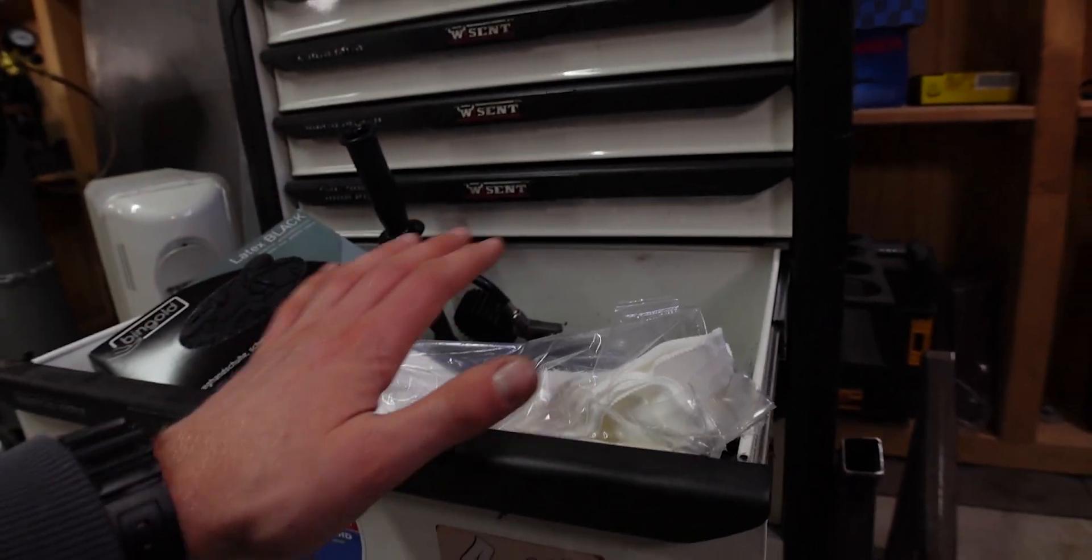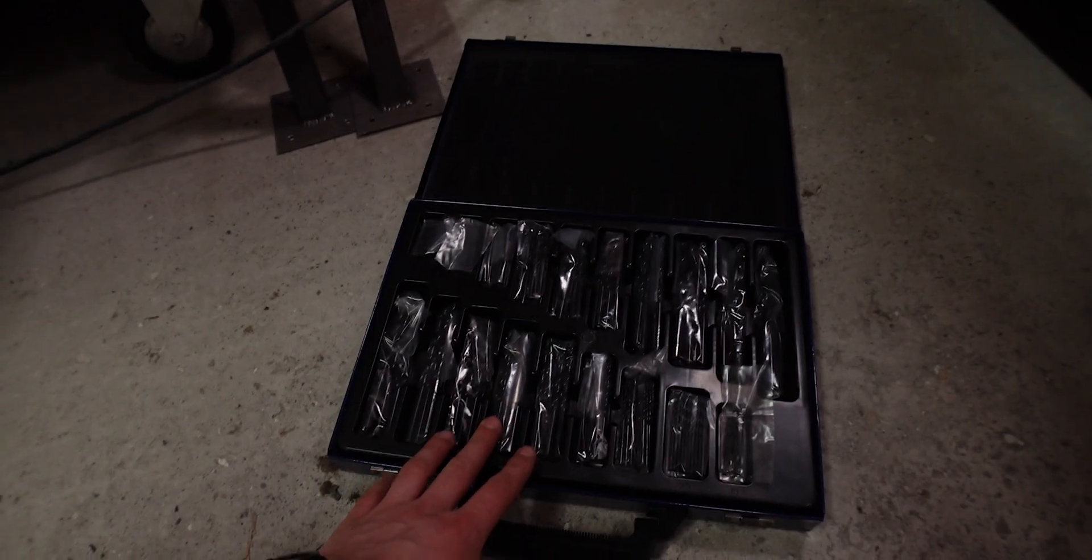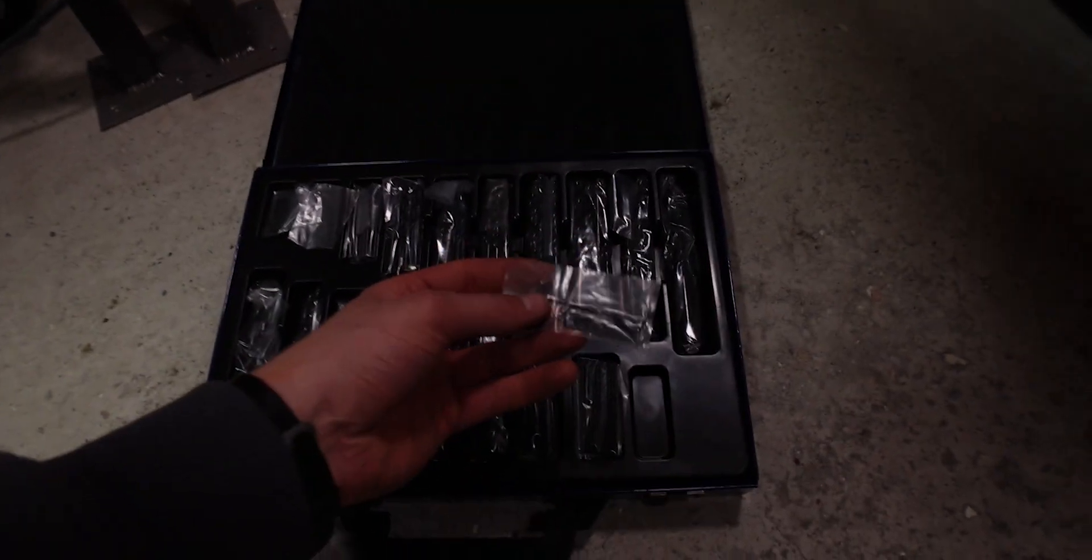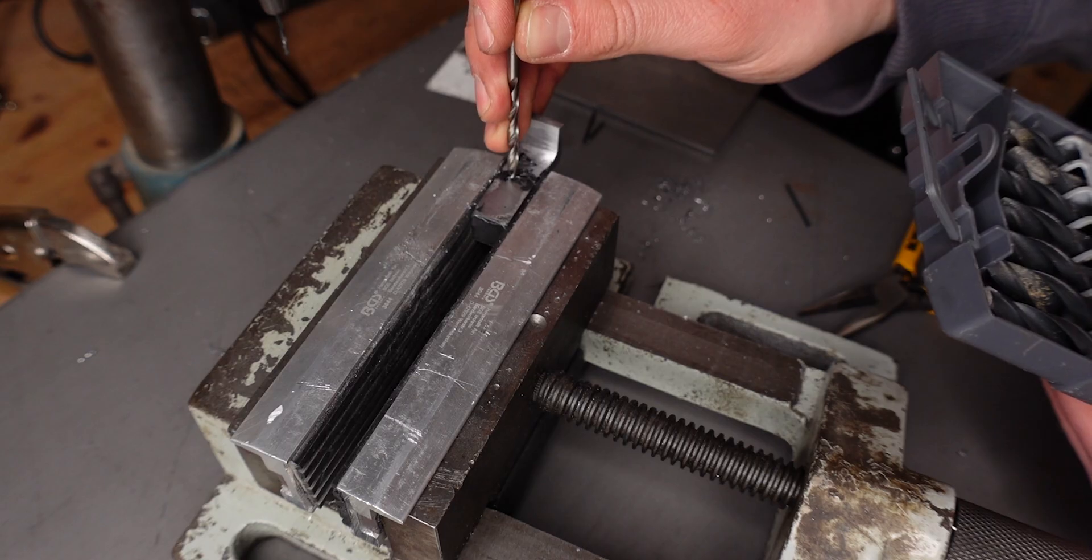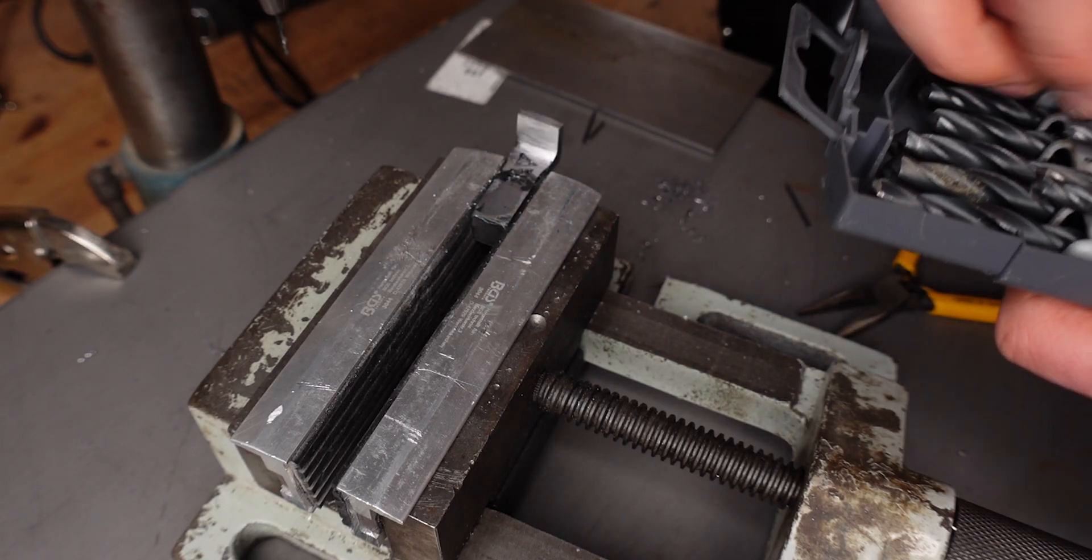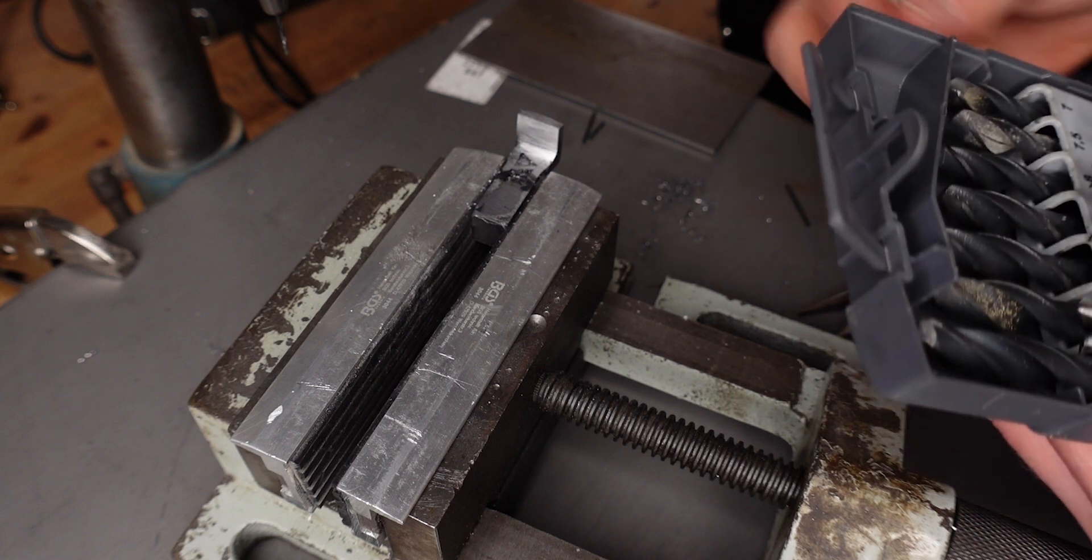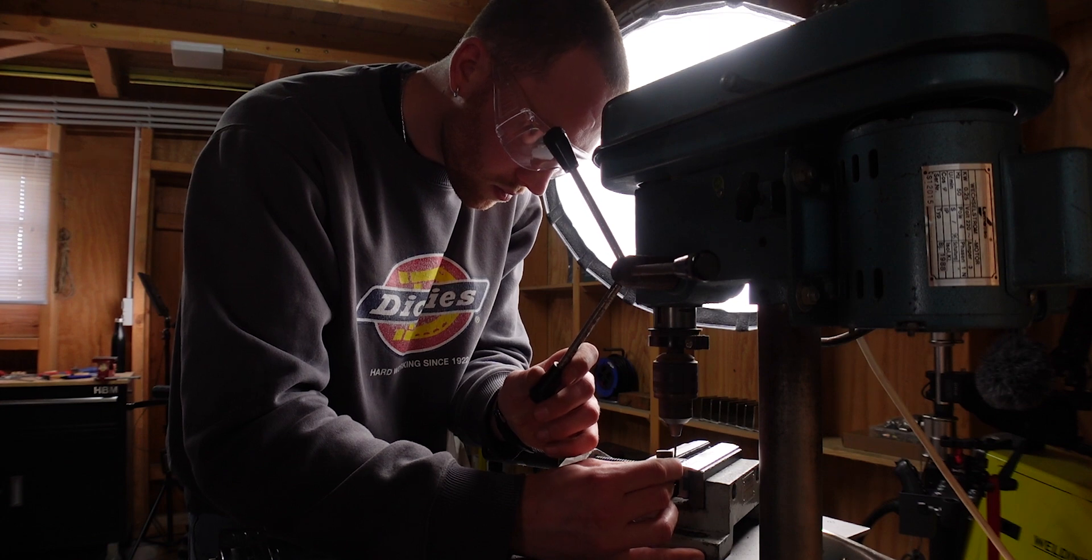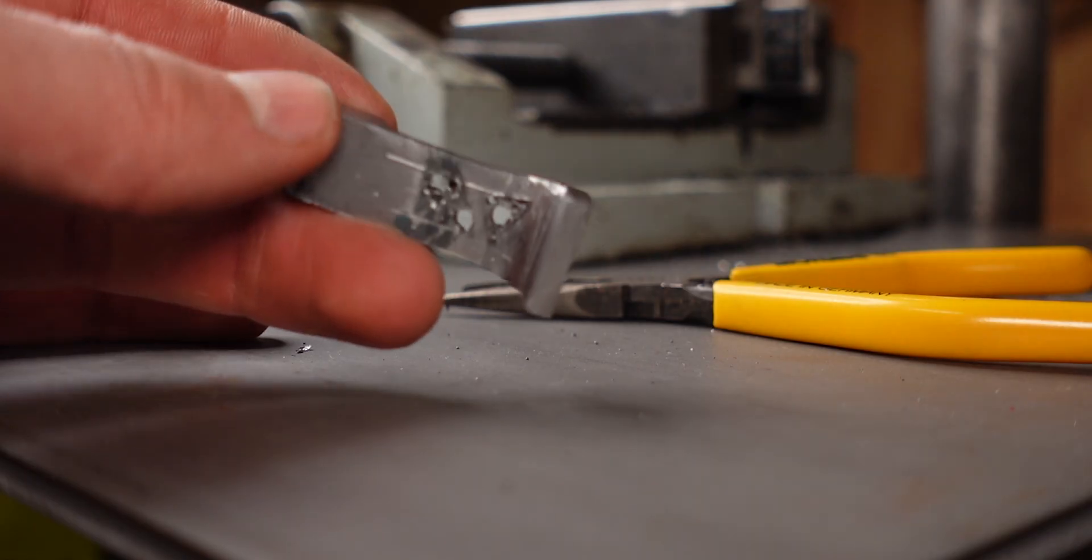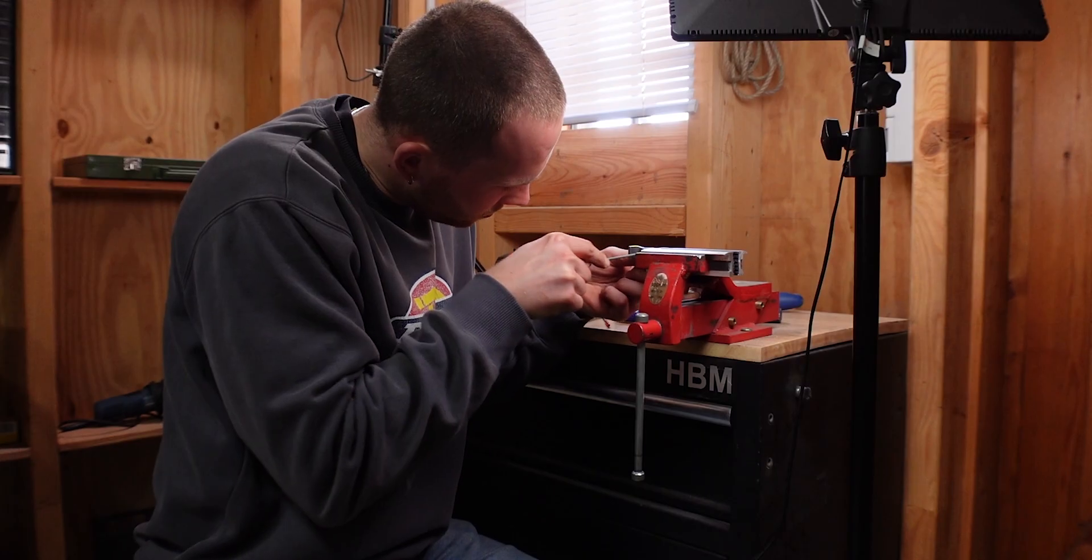That's the second drill that's broken in the process. Good thing that when I bought this tool cabinet it came with a lot of tools because it's second hand and someone left a lot of tools in there and one of the things was a completely new set of drills. This is what we're working with. Hopefully the hand files fit in there and then it's just a lot of filing.